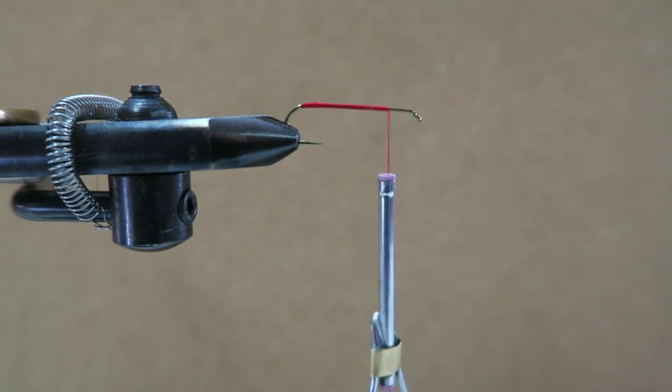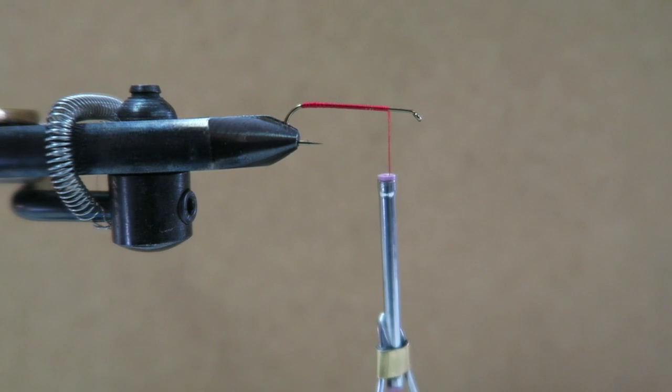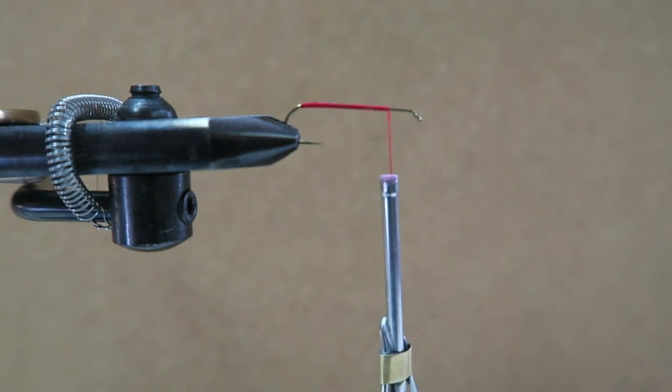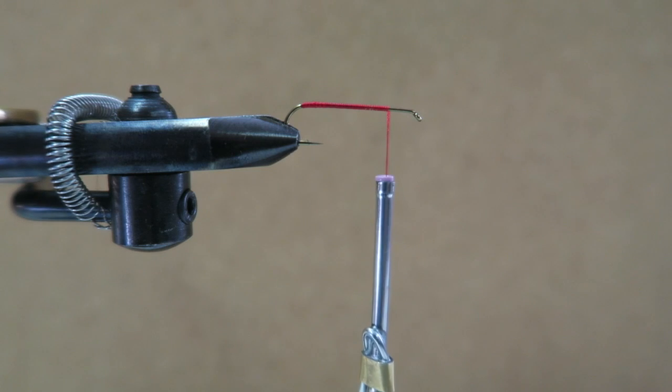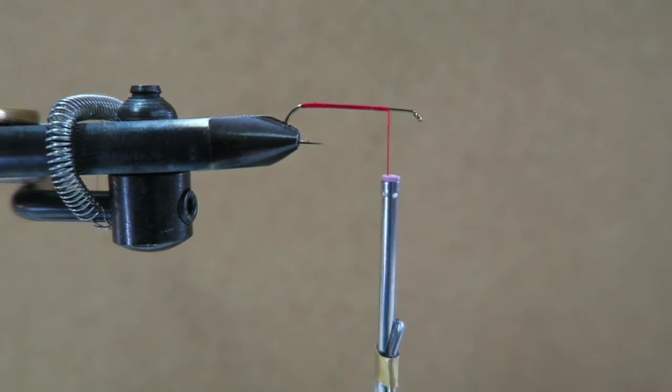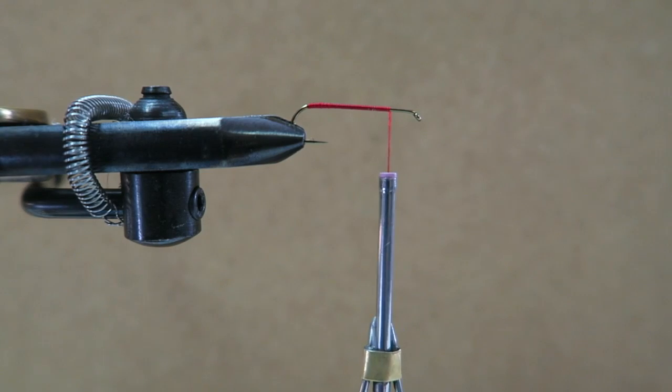But when I tie these up, I actually just like using the red thread the whole way through, so you finish with a red head. It's just my personal preference. If you want to tie on black thread at this point you can, but I like it red personally, so I keep it like that.